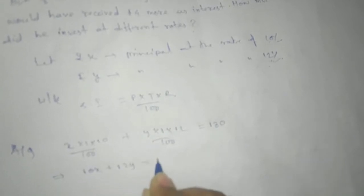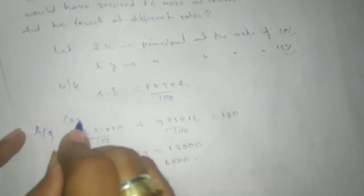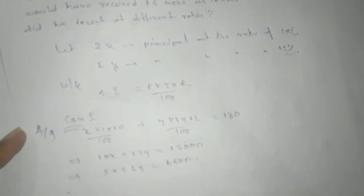From this, make it the simplest form: 10x + 12y = 13000. This implies 5x + 6y = 6500. This is equation number one.